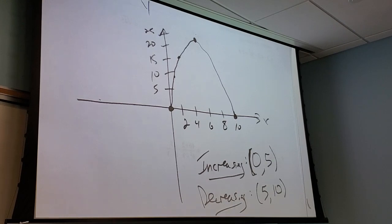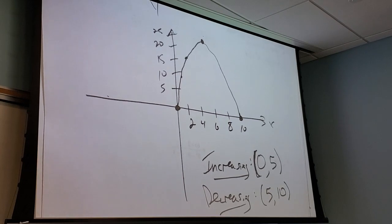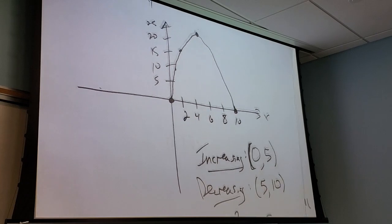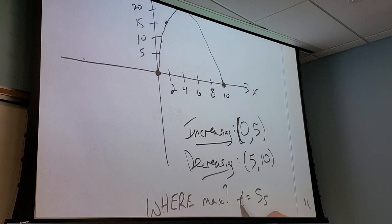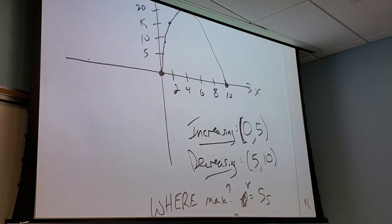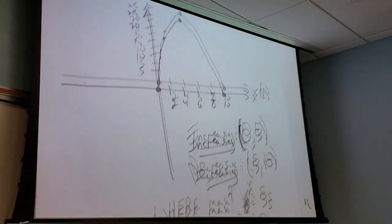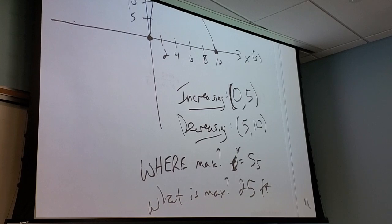You see a problem like this and you should think, 'Good, thank god.' Where does the maximum occur? At x equals 5 seconds. What is the max value? 25 feet. So if this is in feet and seconds, I threw a ball, it went up to 25 feet, and it came back down to my friend 10 seconds later. Not too crazy.